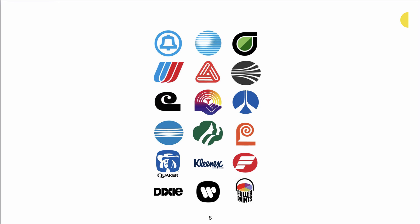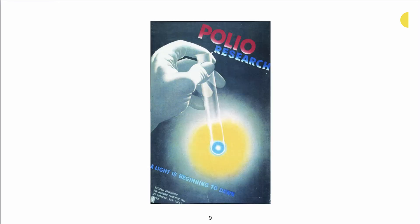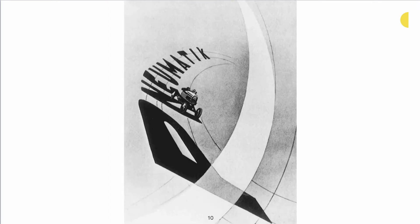Here we have corporate identities once again. In this example, we see clearly the Modern Movement in America. There's the Bauhaus influence, but we see that American content. And in this example, we've got a great version of the Bauhaus.